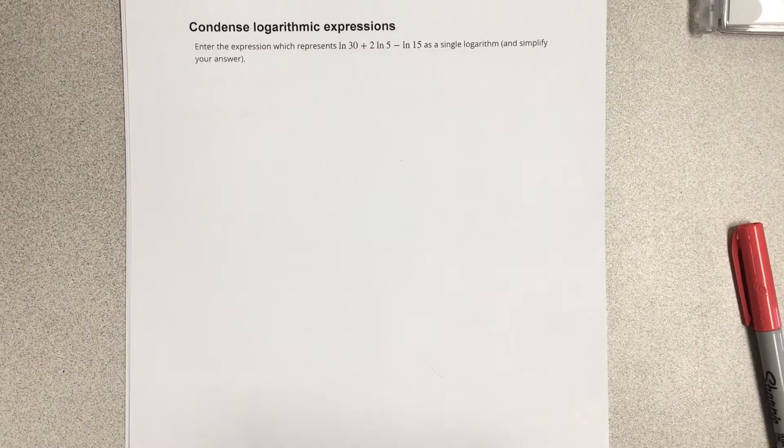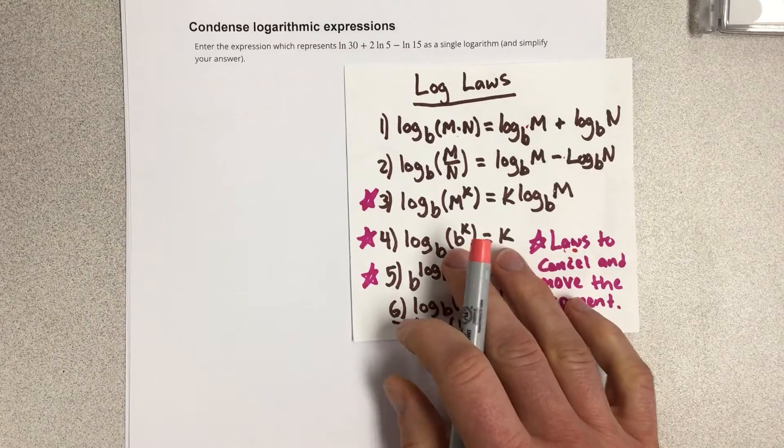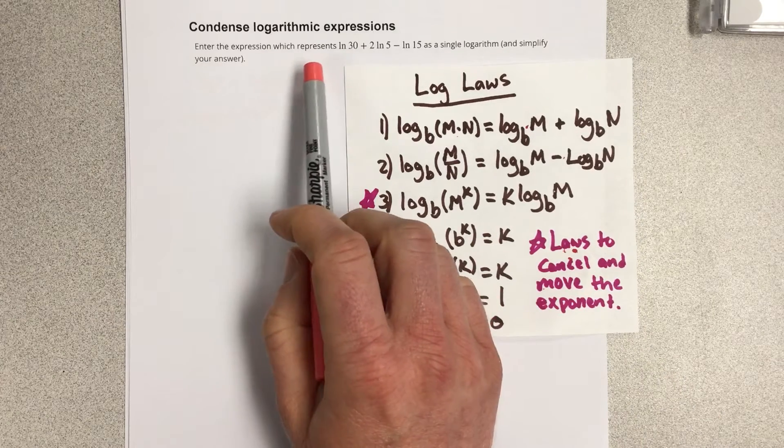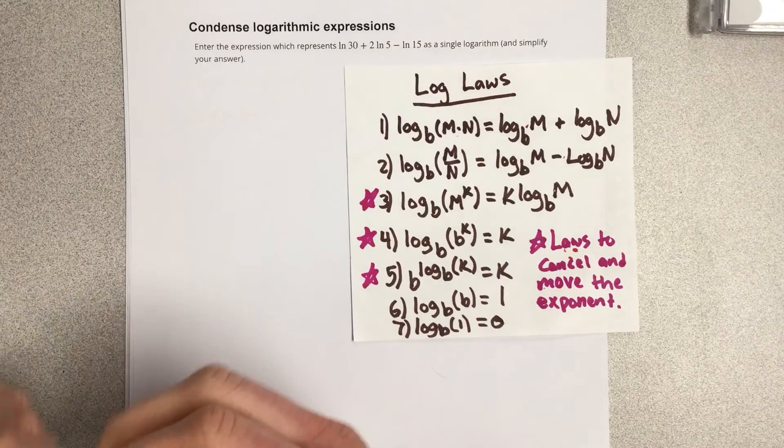In this video, we're going to condense logarithmic expressions. It says, enter the expression which represents ln(30) + 2ln(5) - ln(15) as a single logarithm.